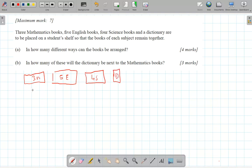Now, we can make three factorial arrangements with the maths books because they're all different. And we can make five factorial arrangements with the English books and four factorial with the science books and one factorial with the dictionary.